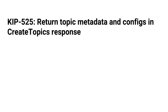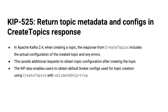KIP 525: return topic metadata and configs in create topics response. When you make a create topics call, you batch up some topics you want to create via this administrative API. Before this KIP, the reply was just an indication of success or failure. Now that reply returns all the metadata — it tells you the partitions and everything you would want to know, which you would normally have had to get with another call to read that metadata. Now you just get all that back in the return. Just some convenience — it's information you probably want anyway, and this is an improvement to that API.